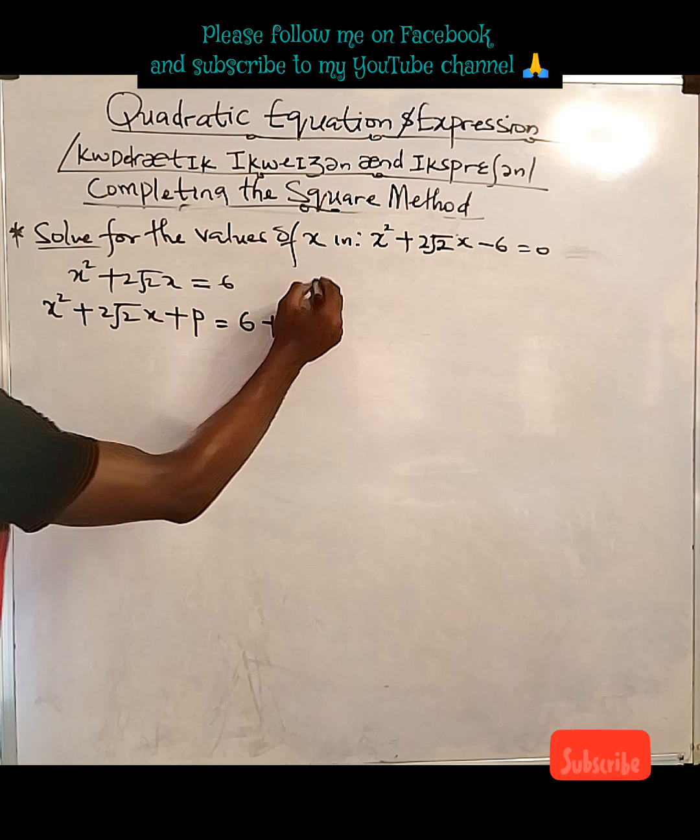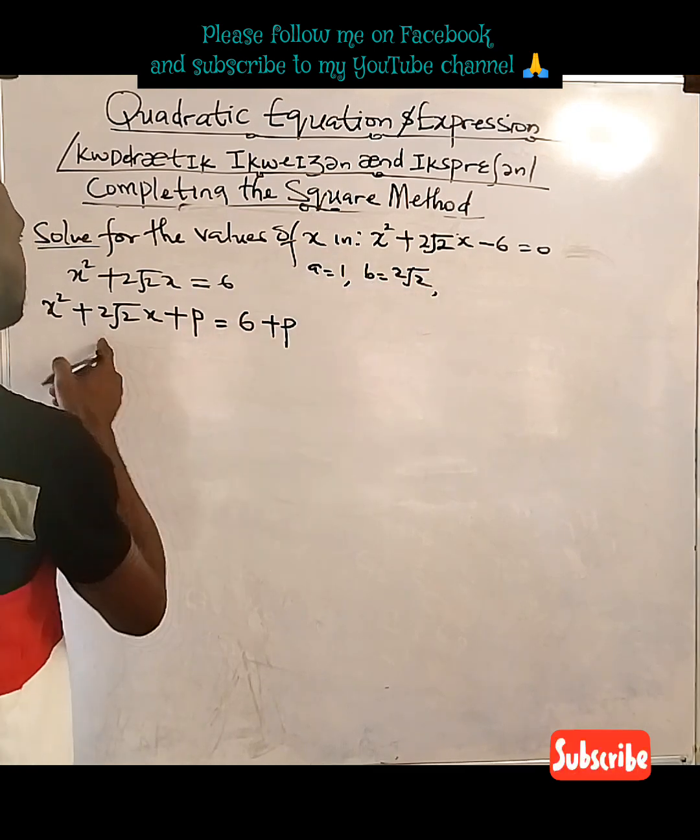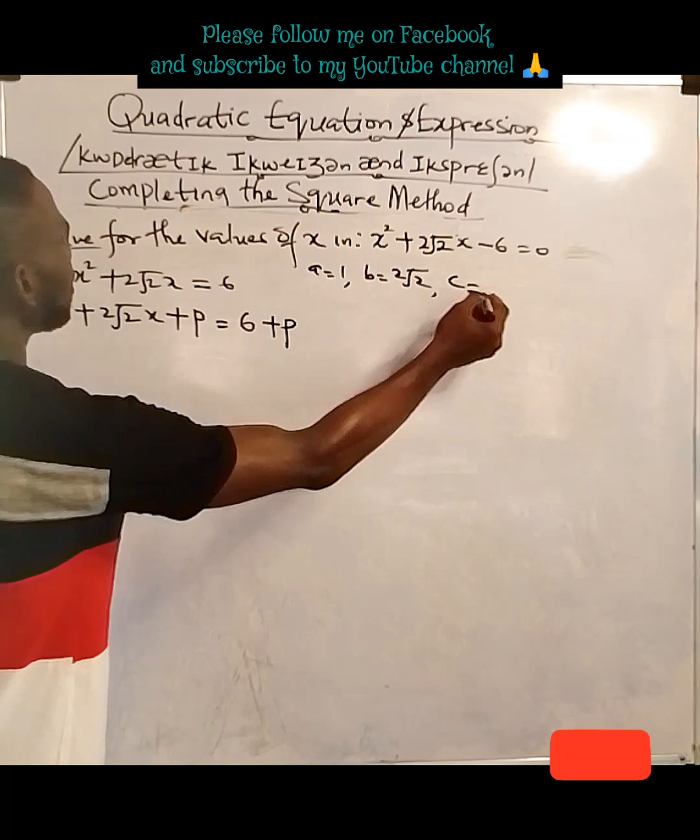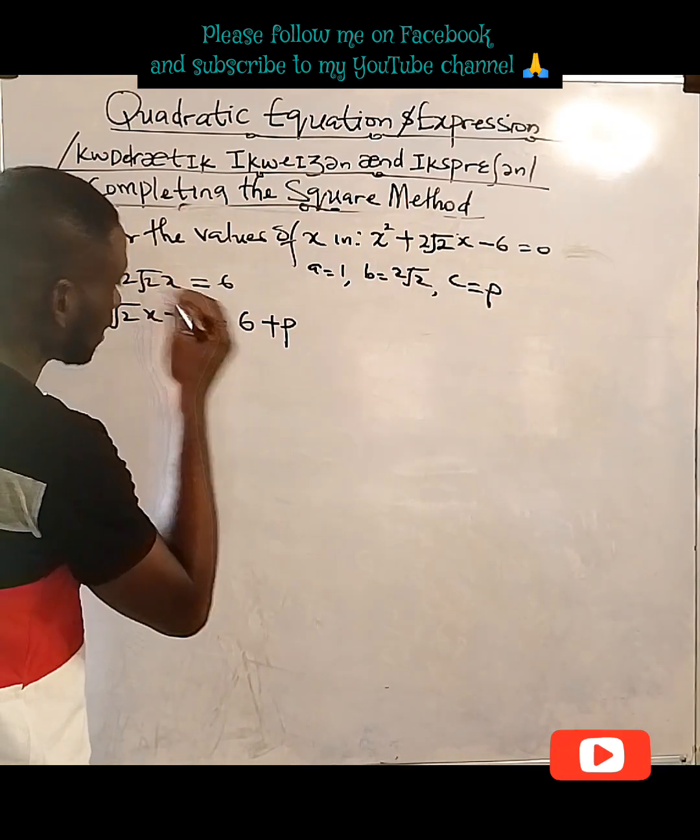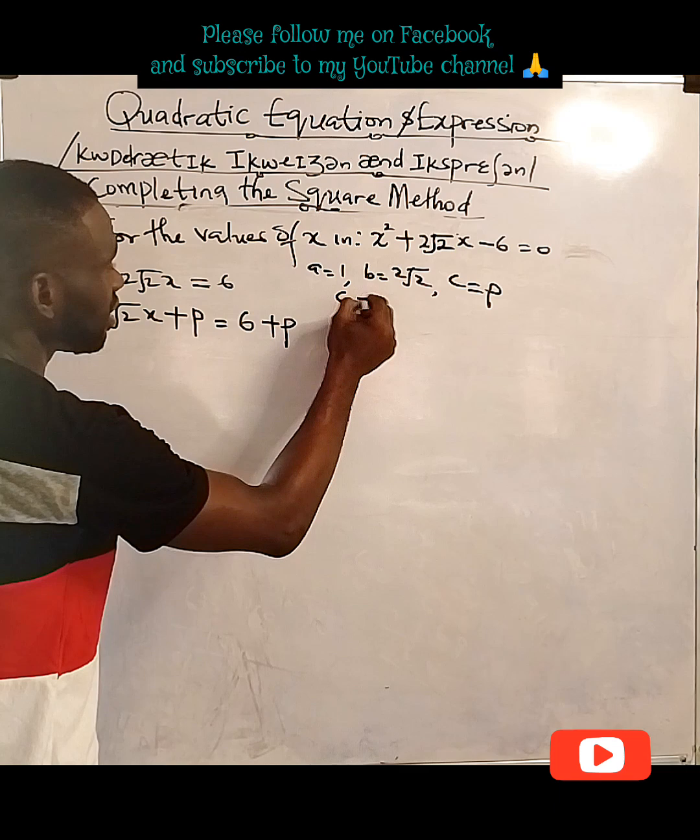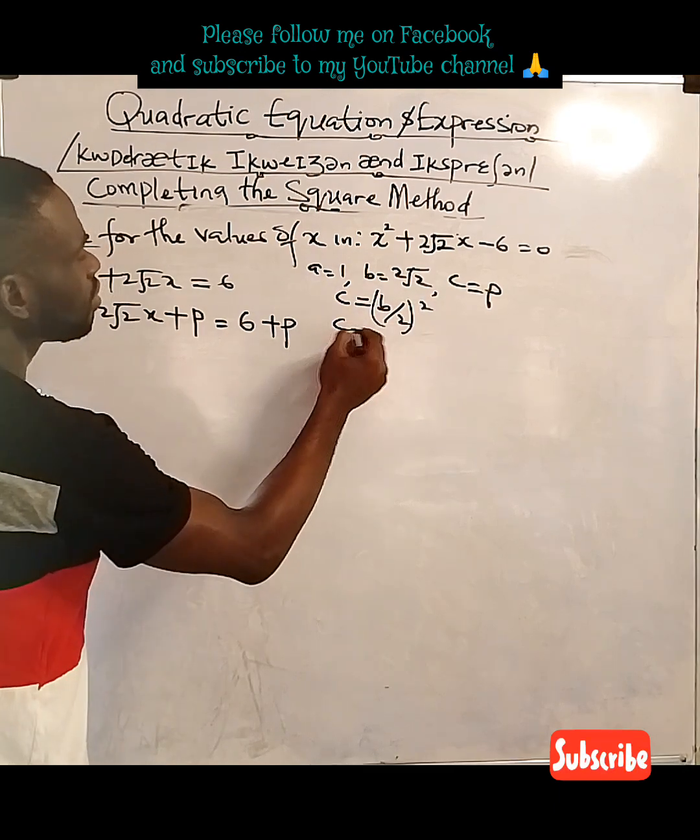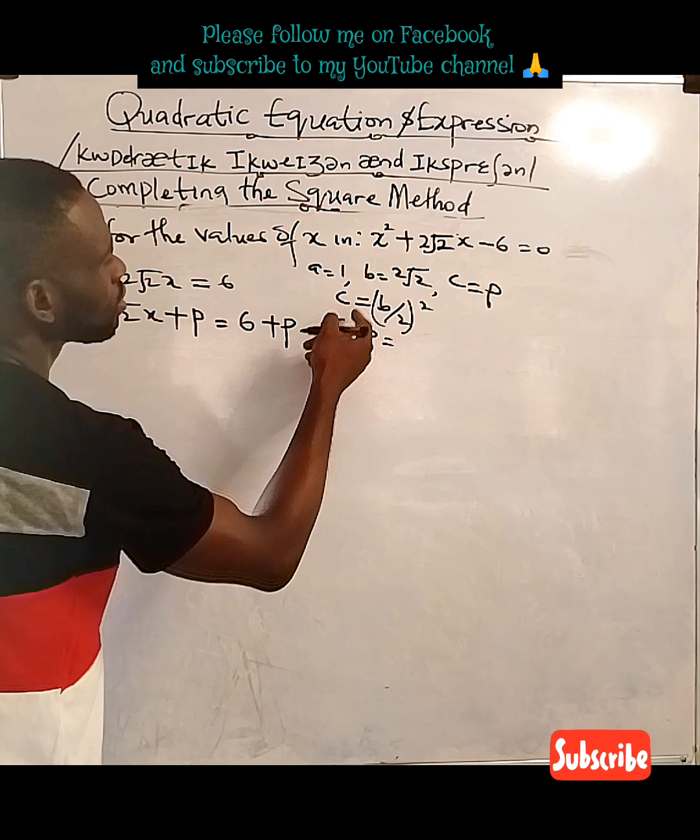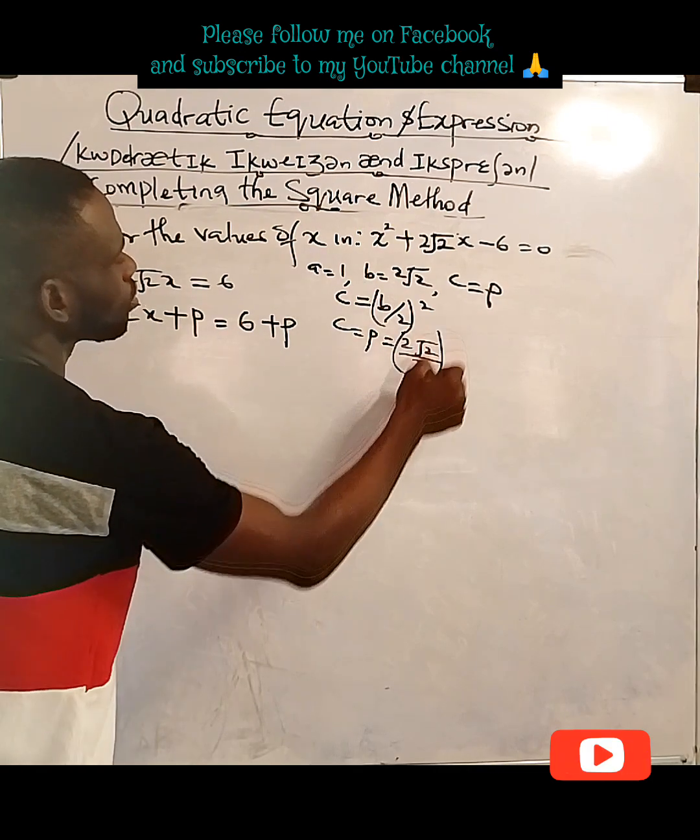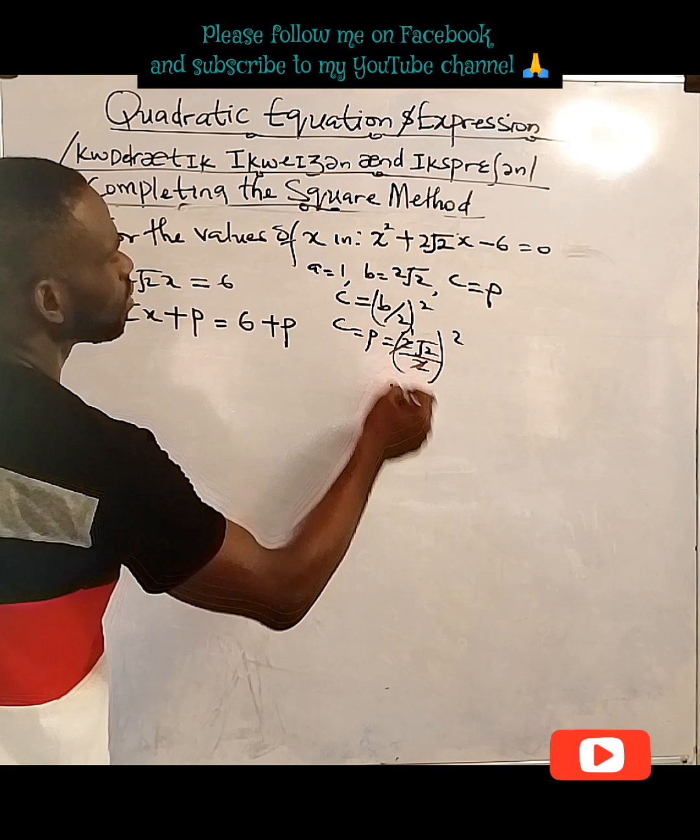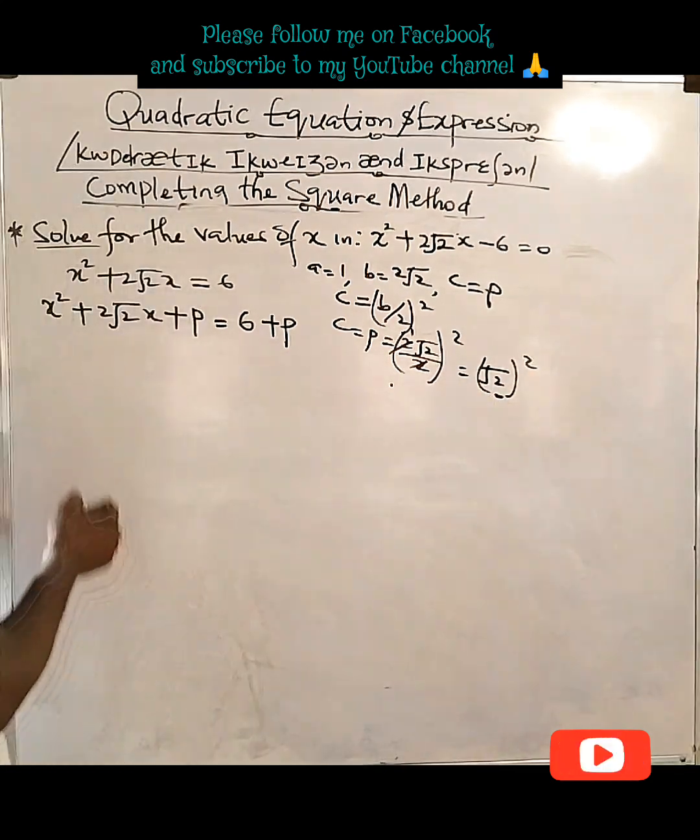Don't forget, a is 1, b is 2 root 2. It's a mixed surd. Then the c is p. So what's going to be the value of p? The value of p, which is c, is b divided by 2 raised to power 2. So the p we're talking about equals to the b, which is 2 root 2 divided by 2 raised to power 2. What do we have? It's root 2 raised to power 2.